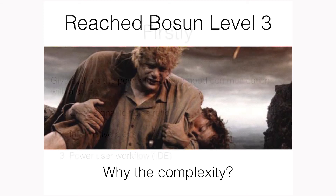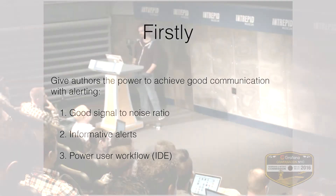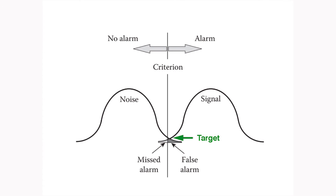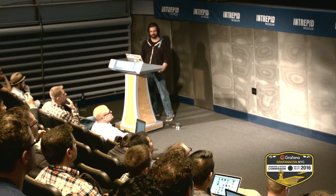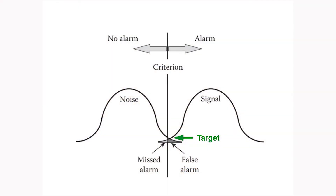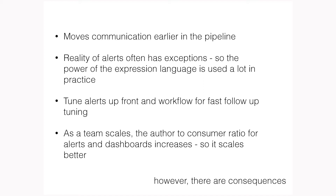That's a lot of complexity, so why? Again, the things I said: good signal-to-noise ratio and informative alerts. As you can see, we really designed this around a power-user workflow — it's pretty much an integrated development environment for alerting. There's a blog post by John Allspaw called 'Considerations for Alert Design' that was actually pretty influential in designing Bosun: we wanted to avoid noise and be less concerned about missed alarms, because people are very concerned about missed alarms when I think really they should be more worried about all the noise. The goal is pure signal — not getting false alarms, not getting missed alarms. Bosun puts the burden of communication on the author, moving communication earlier in that serial pipeline, which helps front-load it because fewer people are doing all this stuff.